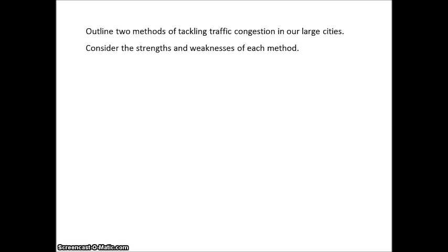This essay question asks: outline two methods of tackling traffic congestion in our large cities. Consider the strengths and weaknesses of each method. The process words here are two: outline and consider.